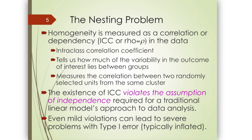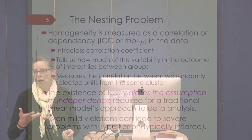The existence of this ICC, even if very small, can violate the assumption of independence that we typically make when using single-level regression or ANOVA models. Even small violations can lead to severe problems with Type I error — we're rejecting much more often than we should be.